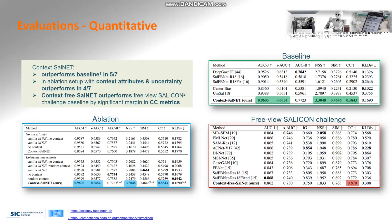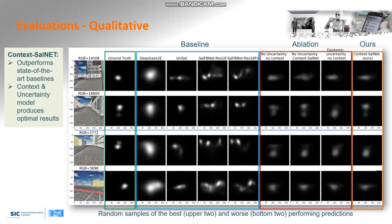While general saliency prediction is not the focus of this paper, we evaluate a context-free version of our model given the saliency challenge, where our model outperforms the other methods by a significant margin in the case of the Pearson correlation coefficient metric.